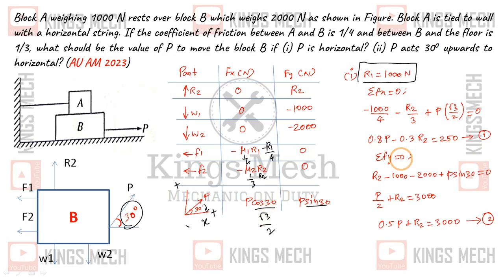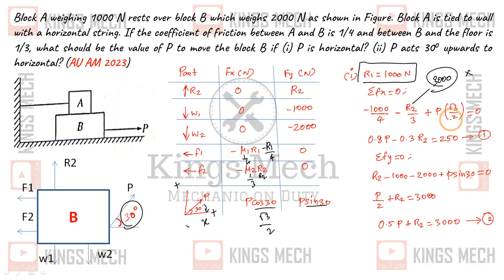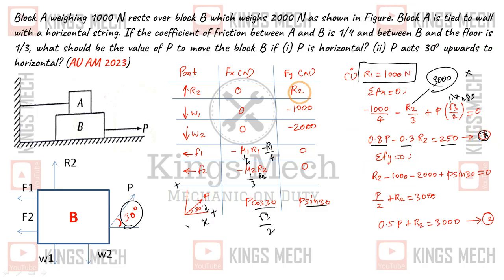Applying summation Fx = 0 for Case 2: P cos 30 minus R1/4 minus R2/3 = 0, which gives root 3P/2 minus R1/4 minus R2/3 = 0. Simplifying: 0.866P minus 0.25 times 1000 minus R2/3 = 0, giving 0.866P minus 250 minus R2/3 = 0. This is Equation 1.